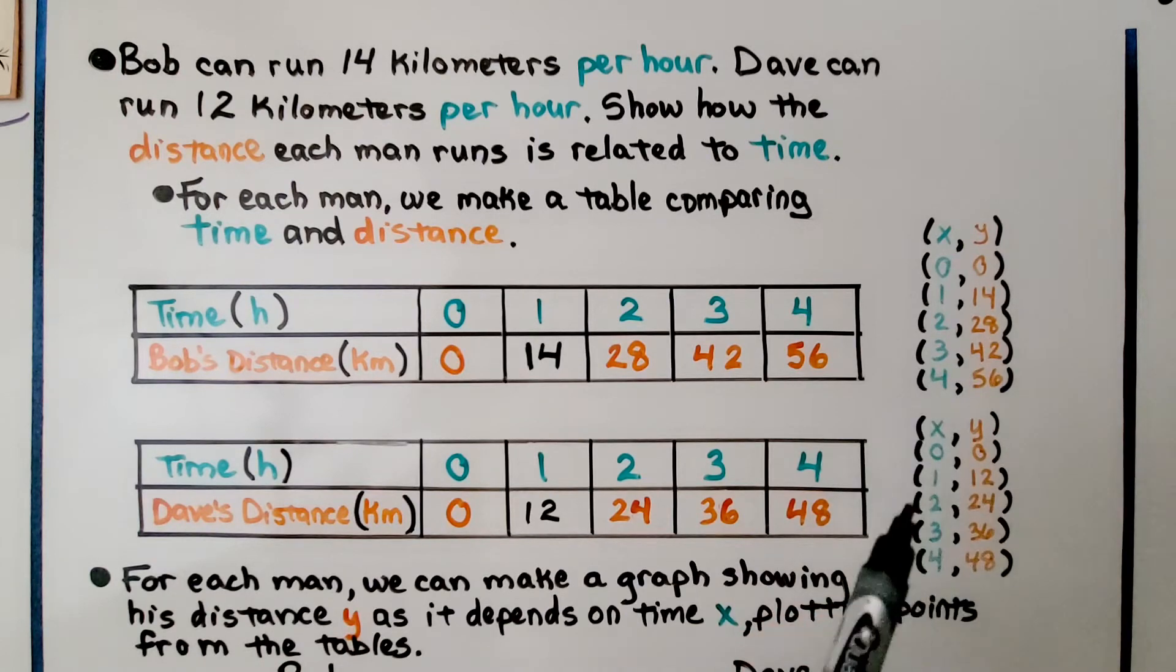These are the ordered pairs for Bob, and these are the ordered pairs for Dave. And for each man, we can make a graph showing his distance, y, as it depends on time, x, plotting points from the tables.